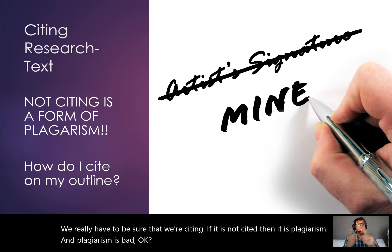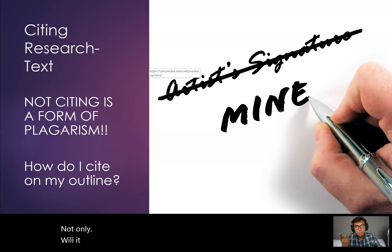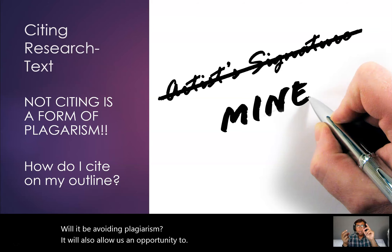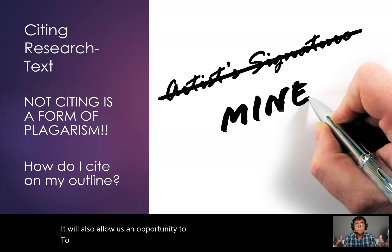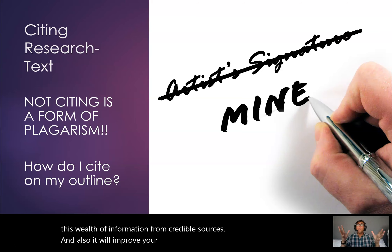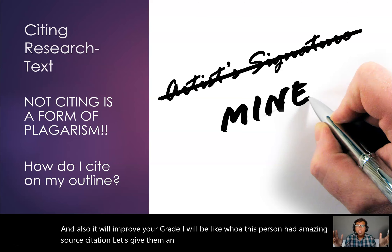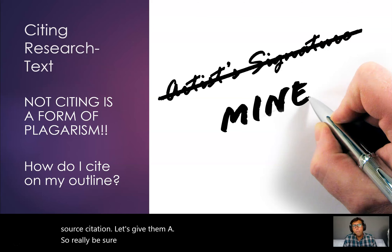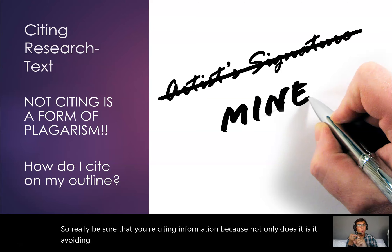Not only will citing avoid plagiarism, it will also allow us an opportunity to communicate our credibility. It shows that you found a wealth of information from credible sources. And also, it will improve your grade. So really be sure that you're citing information, because not only does it avoid plagiarism — it also improves your credibility and improves your grade.